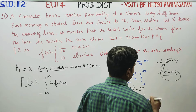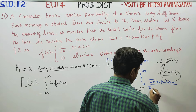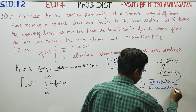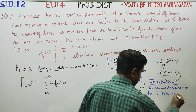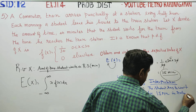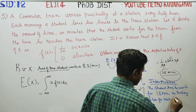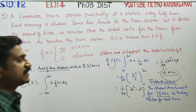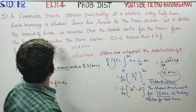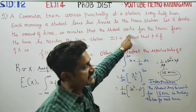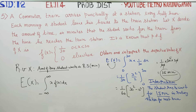What is the interpretation? The interpretation is: the student has to wait for fifteen minutes at the railway station for the next train. This is the expected time for the next train. That is the interpretation. Thank you.